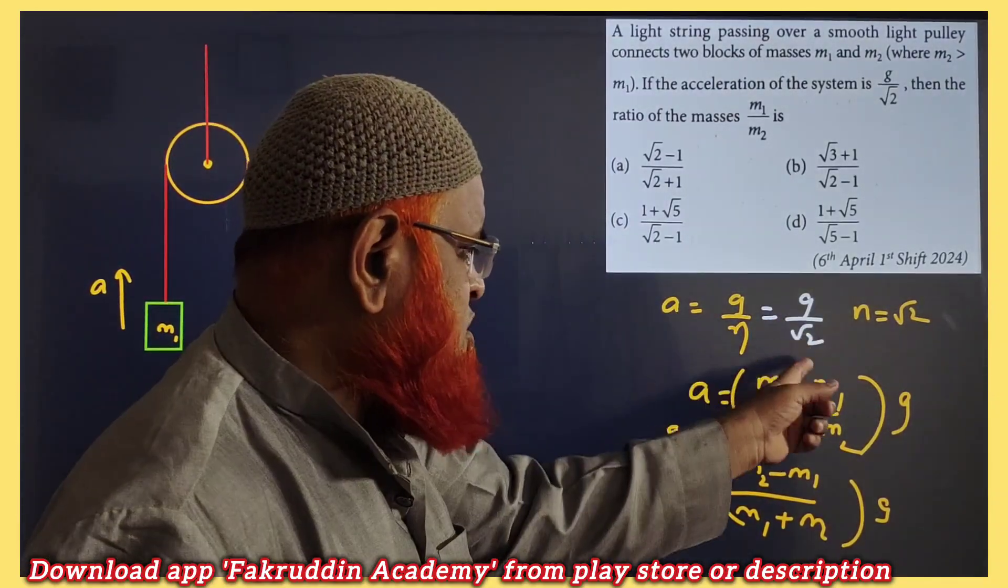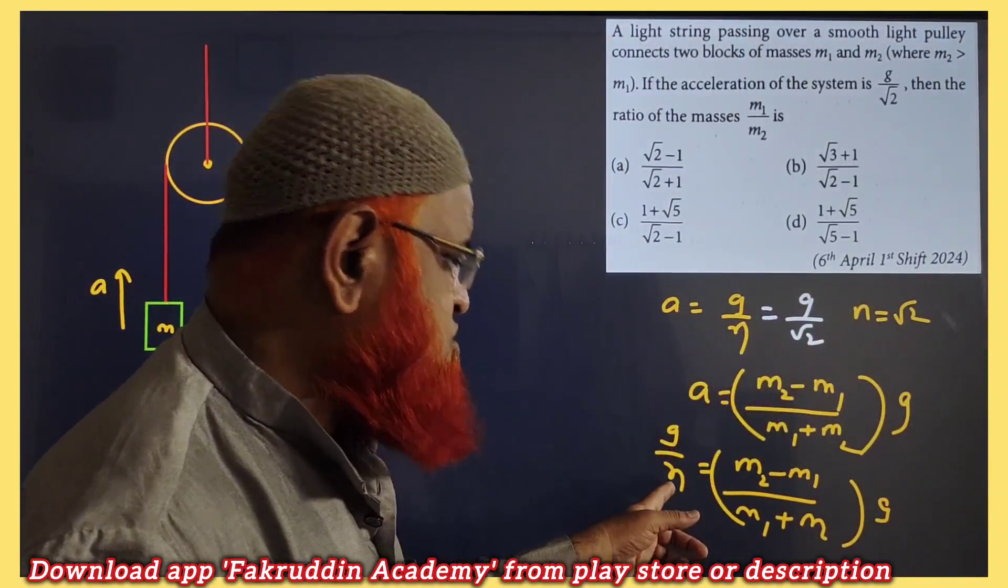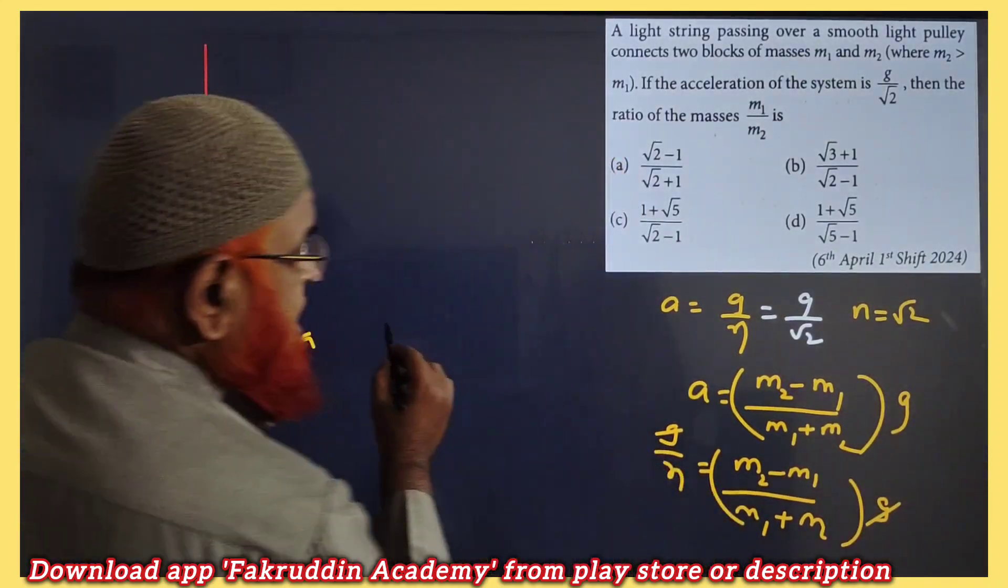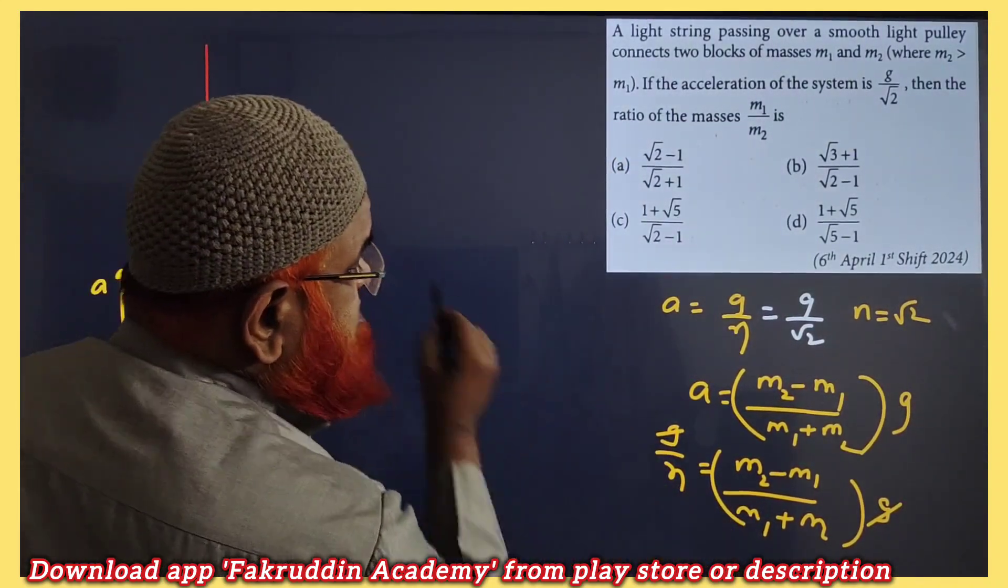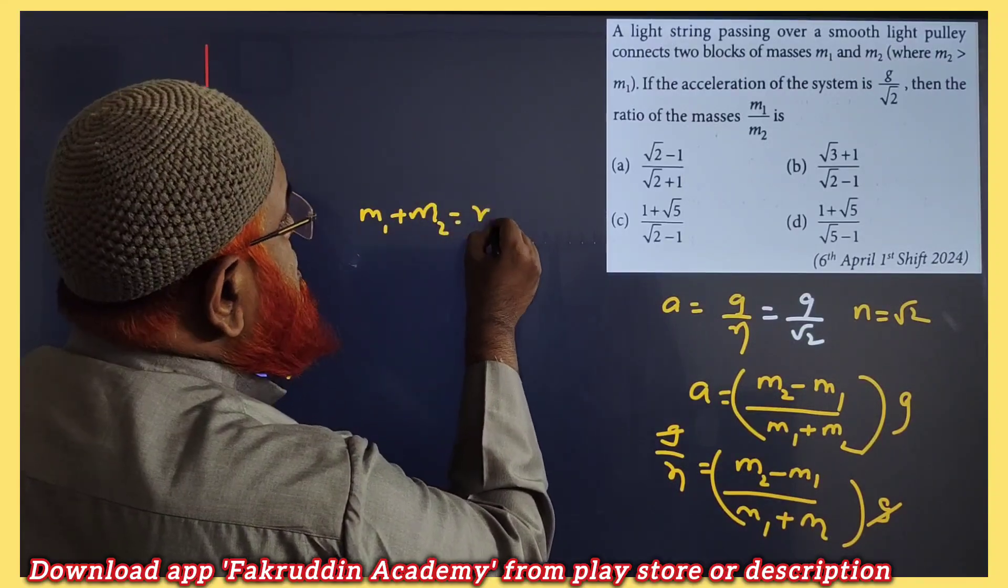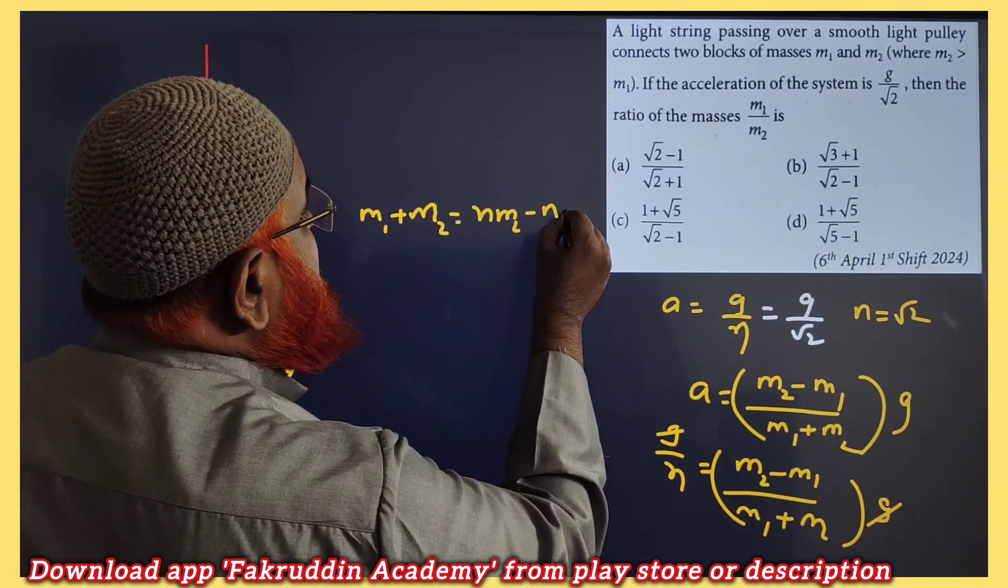Instead of a is equal to g by root 2, you have to write a is equal to g by n. That's it. So g gets cancelled. Then what I am going to get now? If you cross multiply, you will be getting m1 plus m2 is equal to n m2 minus n m1.